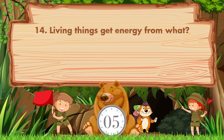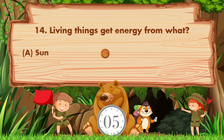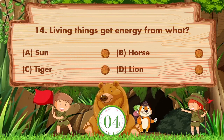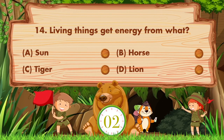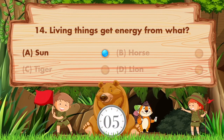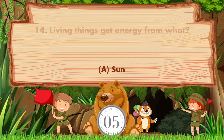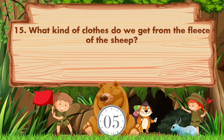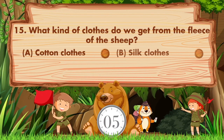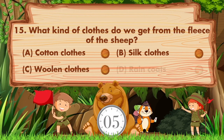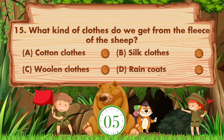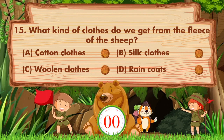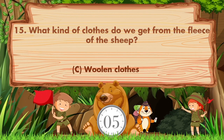Living things get energy from what? Option A: sun, B: horse, C: tiger, D: lion. What kind of clothes do we get from the fleece of the sheep? Option A: cotton clothes, B: silk clothes, C: woolen clothes, D: raincoats. Answer is option C, woolen clothes.